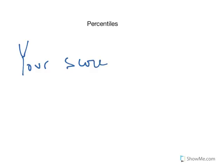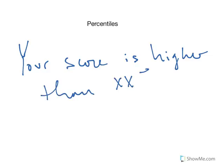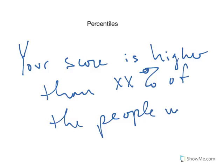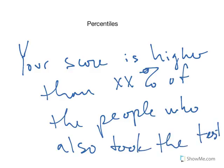Welcome back. There's one thing you're going to run across when you see average scores and measures of variability, and this is really important because it's pretty practical in terms of how we think about scores compared to other scores. It is called a percentile, or sometimes you'll see it called a percentile rank. Percentiles are pretty useful. A percentile just says your score is higher than some percentage of the people who also took the test or measure.